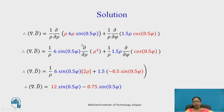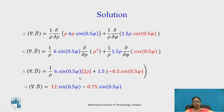Simplifying further: the factor 6 sin(0.5φ) is constant with respect to ρ and can be taken outside the derivative, leaving ∂/∂ρ(ρ²) inside. For the φ term, 1.5ρ is constant and ∂/∂φ(cos 0.5φ) = −0.5 sin(0.5φ). Then ∂/∂ρ(ρ²) = 2ρ, so the ρ cancels with the 1/ρ factor, giving 12 sin(0.5φ). The φ term gives −0.75 sin(0.5φ). This is del dot D-bar; we have not yet calculated the RHS.